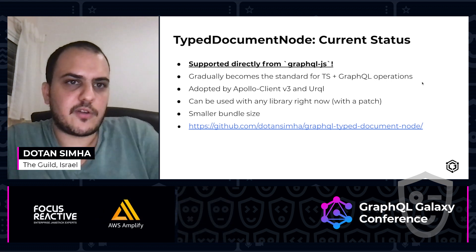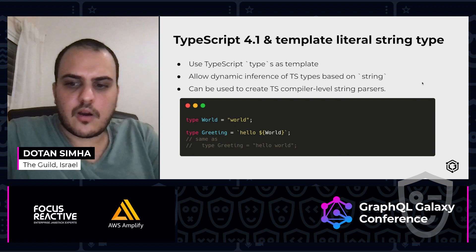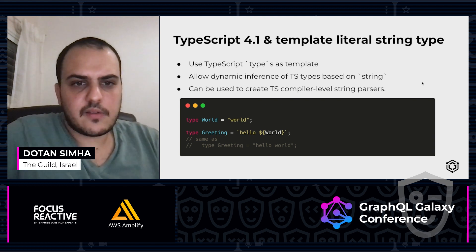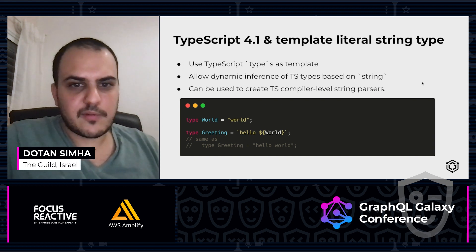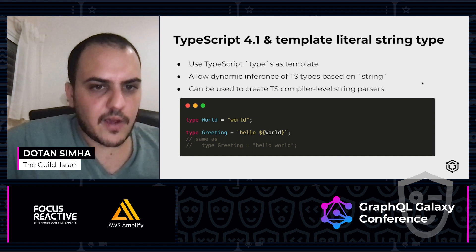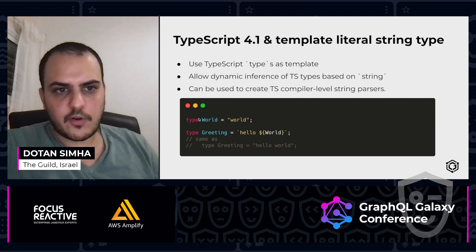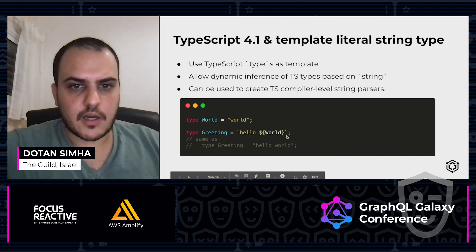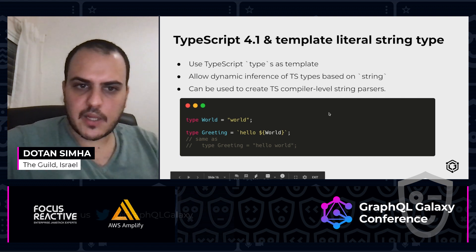My next topic is the next version of TypeScript — TypeScript 4.1 — and the new awesome feature it has. In this version you're going to be able to use strings and do manipulation on those strings at the level of the TypeScript compiler. Think of taking string types that you define in TypeScript, like you see here, and doing manipulations at the compiler level. For example, we define a type with the string 'world', then we have a new type with 'greeting' and we just concatenate that string to get a new type with that output. This is simple, but we can do much more with it.